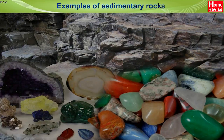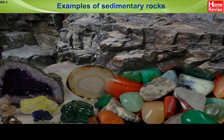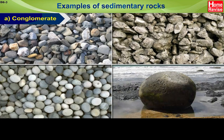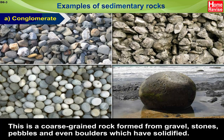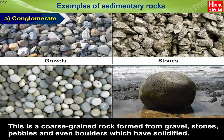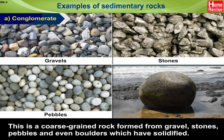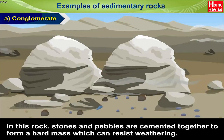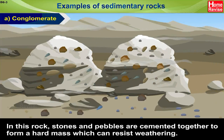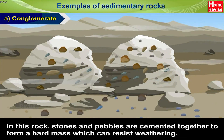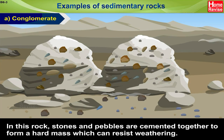Examples of sedimentary rocks. A. Conglomerate. This is a coarse-grained rock formed from gravel, stones, pebbles and even boulders which have solidified. In this rock, stones and pebbles are cemented together to form a hard mass which can resist weathering.